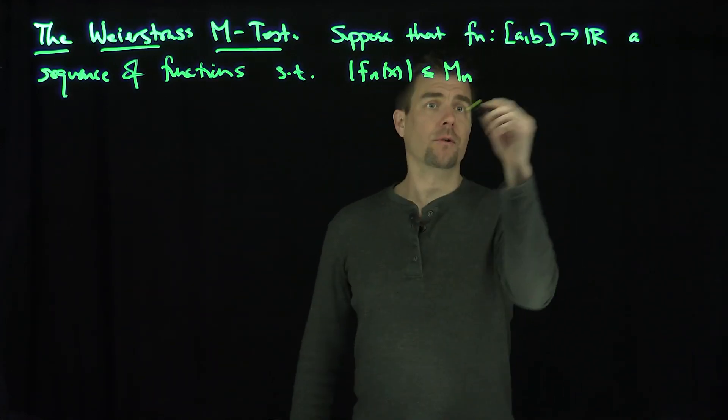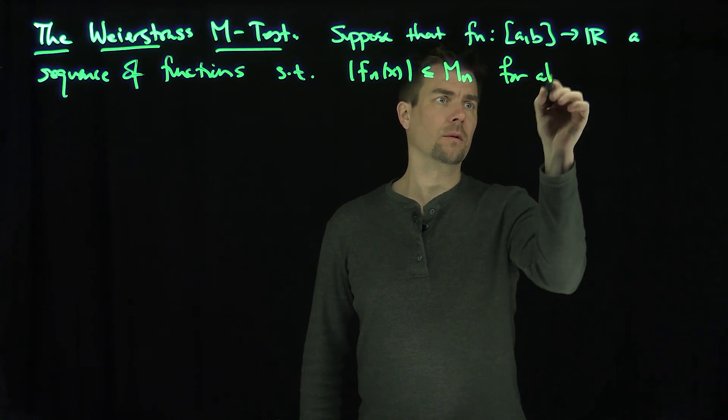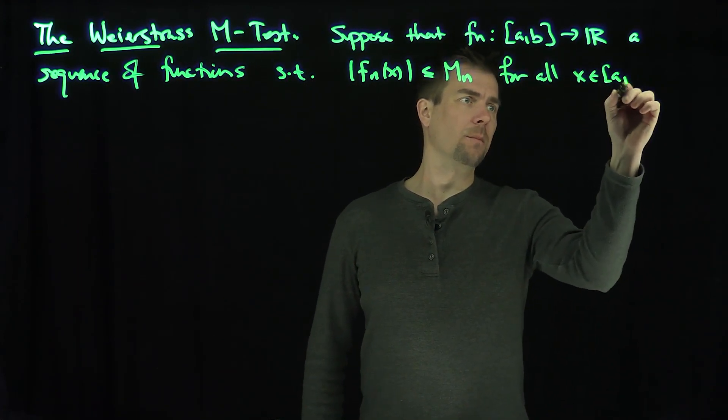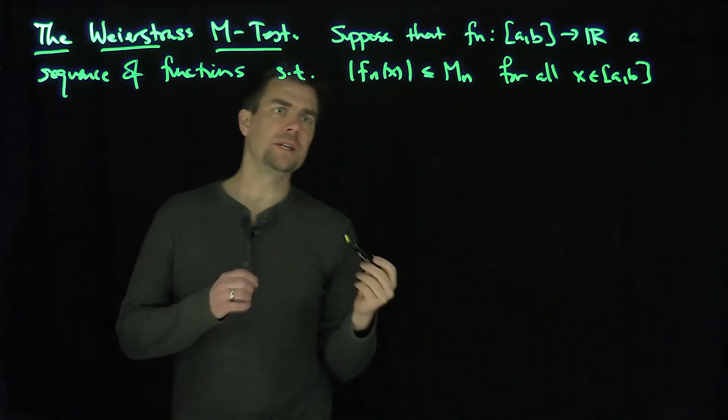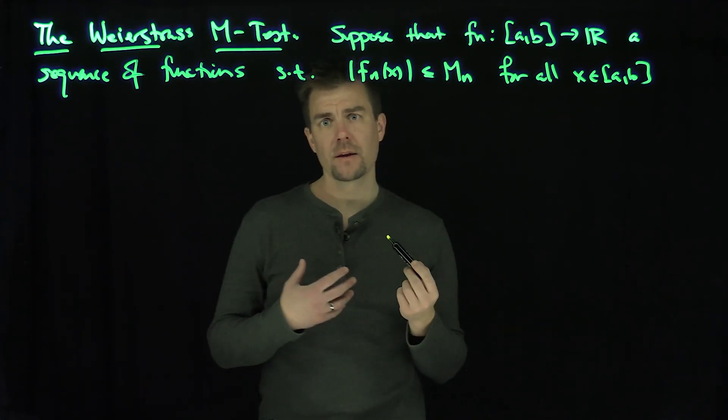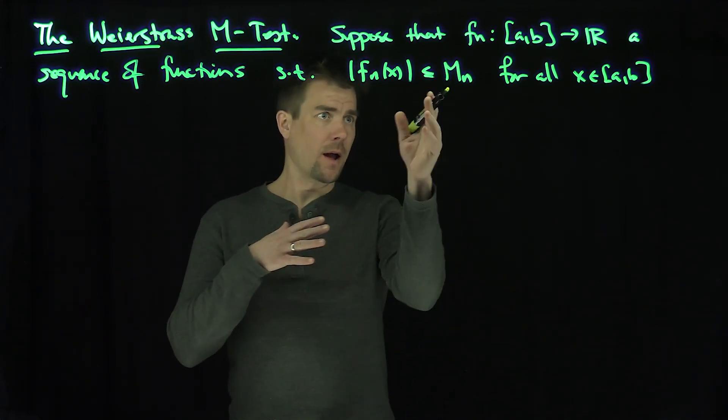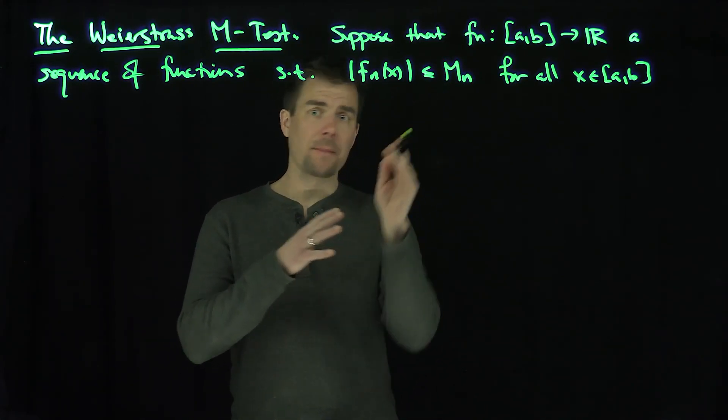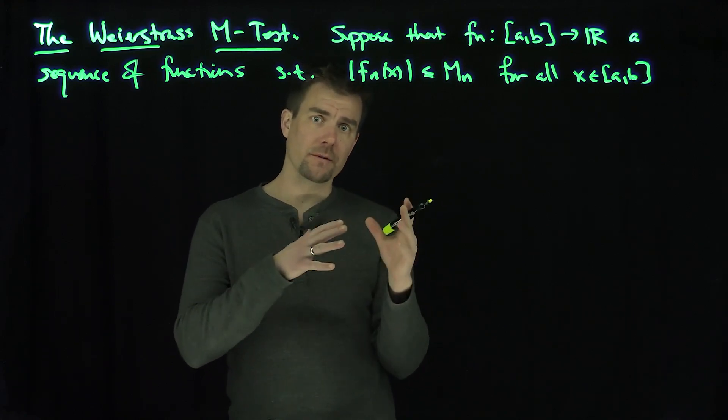For all x in (a,b), in other words, each individual function f_n is bounded by a number m_n, so this m_n can change from function to function.